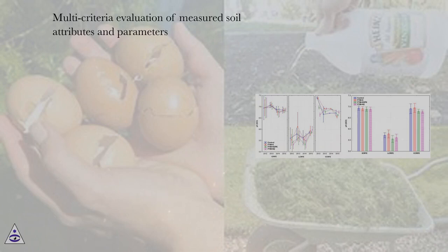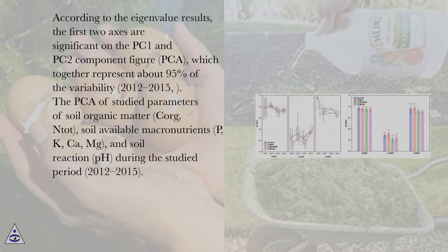Multi-criteria evaluation of measured soil attributes and parameters. According to the eigenvalue results, the first two axes are significant on the PC1 and PC2 component figure (PCA), which together represent about 95% of the variability.